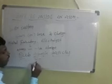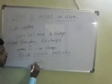Atoms are neutral, so they should have at least two types of subatomic particles — one positive and one negative. In fact, three different subatomic particles have been discovered.